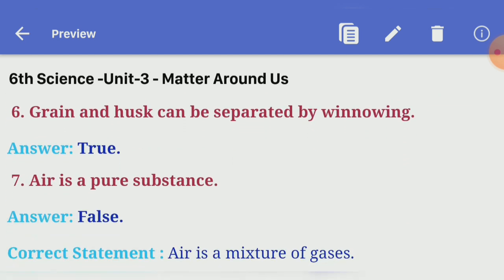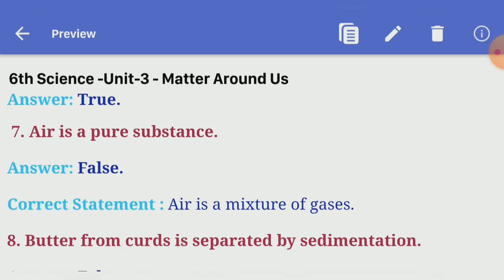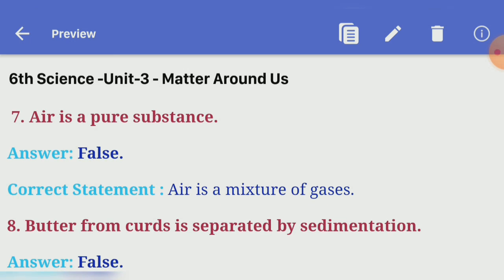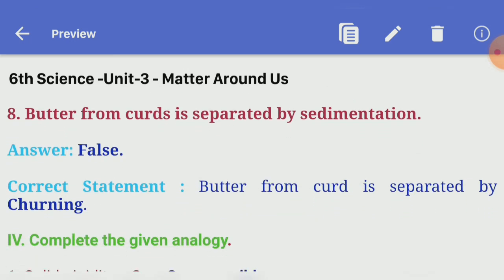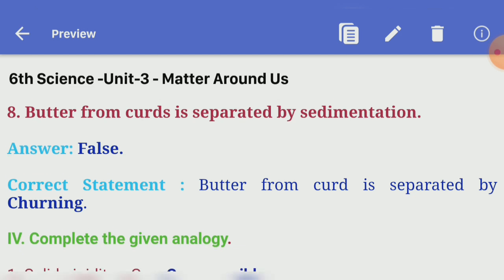Seventh one: air is a pure substance. Answer — false. Correct statement: air is a mixture of gases. Eighth one: butter from curds is separated by sedimentation. Answer — false. Correct statement: butter from curds is separated by churning.